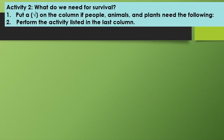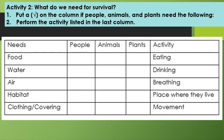Activity 2: What do we need to survive? Put a check on the column if people, animals, and plants need the following. Perform the activity listed in the last column. In the first column, you will see the needs of living things: food, water, air, habitat, and clothing. Put a check on the column if people, animals, and plants need them.